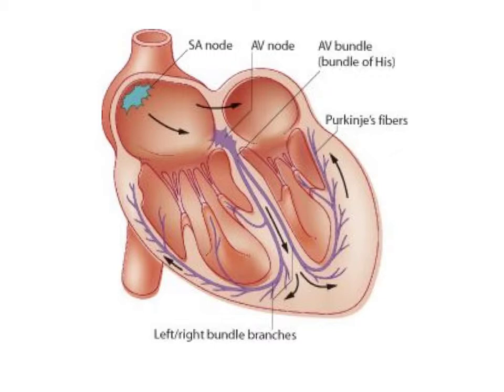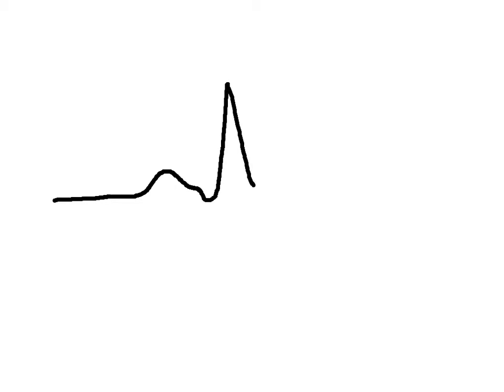Now let's move on to talk about the pressure-volume diagram. Now that we know where the electrical conductances are occurring, let's look at what you would see on an EKG: P, Q, R, S, and then a T wave.